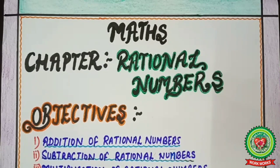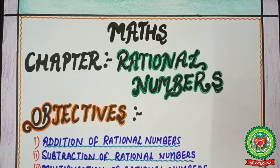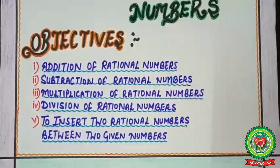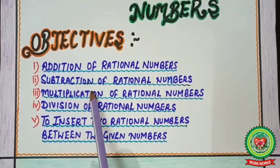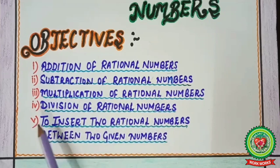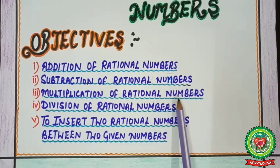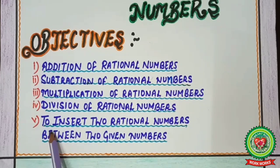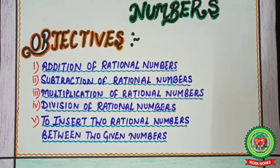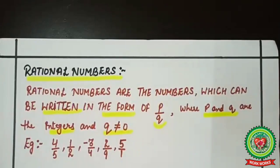Today we are going to start with a new chapter on rational numbers. The objectives of this chapter are: addition of rational numbers, subtraction of rational numbers, multiplication of rational numbers, division of rational numbers, and how to insert two rational numbers between two given numbers. Let's get started with the first two objectives.